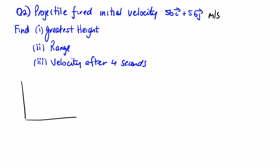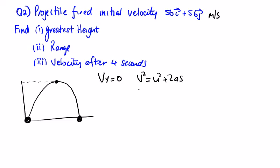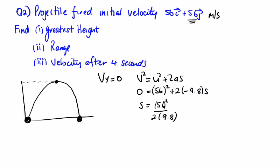A quick sketch: greatest height at the top, range from start to landing. At greatest height V_y = 0. Using v² = u² + 2as: 0 = 56² + 2(−9.8)s, so s = 56² / (2 × 9.8) = 56² / 19.6 = 160 meters.